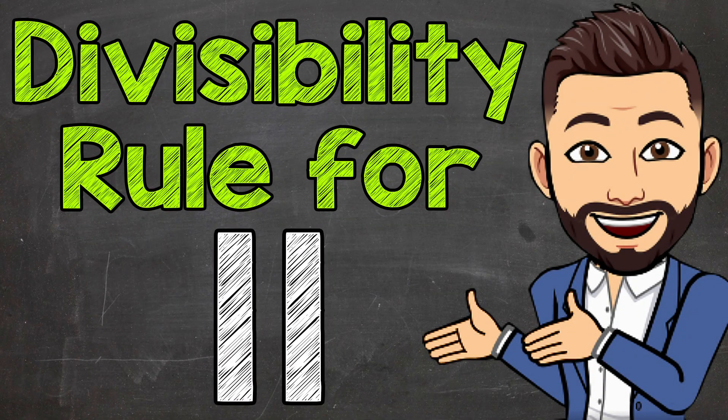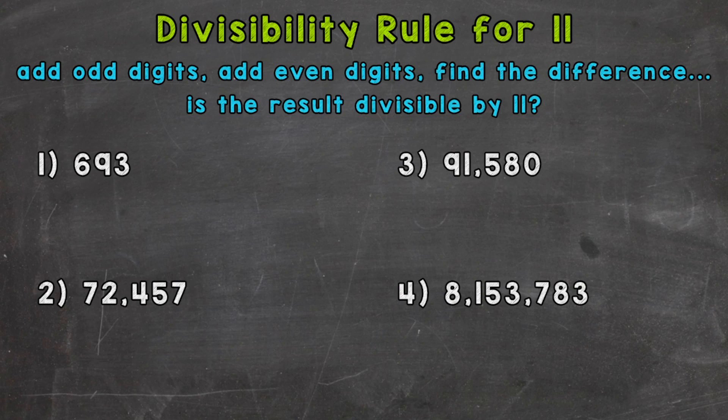Welcome to Math with Mr. J. In this video, I'm going to cover the divisibility rule for 11. Now remember, when we're checking for divisibility, we're checking to see if we can divide without getting a remainder. So the given numbers work out exactly.